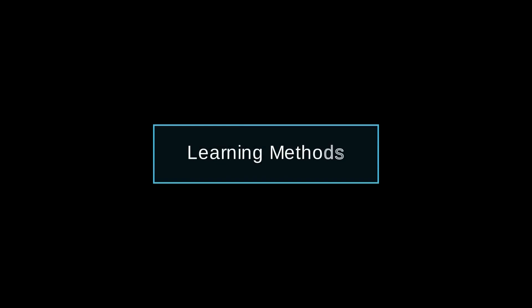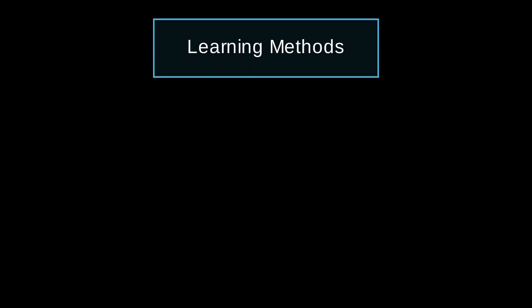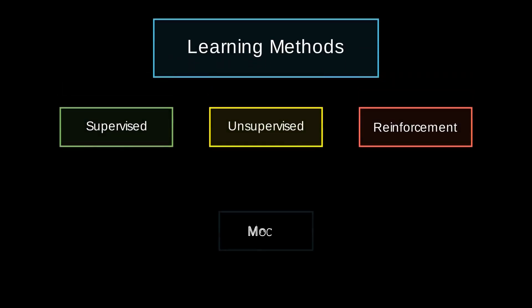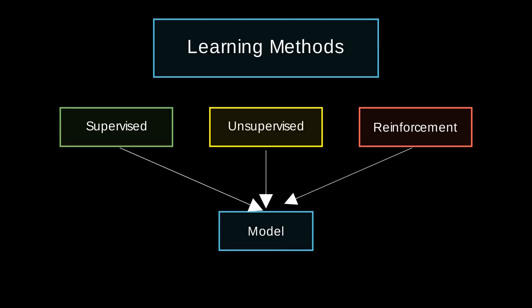So there are three ways in which we can train the model: first one is supervised, second one is unsupervised, and the third is reinforcement learning. We'll be seeing only two of them today.